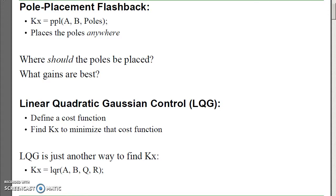With pole placement, given a dynamic system, I can find the feedback gains to place the poles anywhere I want. The problem is I don't really know where the poles belong. The dominant pole kind of makes sense — that tells you how the system is going to behave. But where do you put all the rest of the poles, or what gains are best? The strength of pole placement is you can do anything. Its weakness is you can do anything — you don't really know where the poles belong.